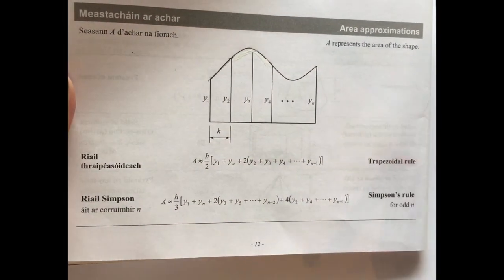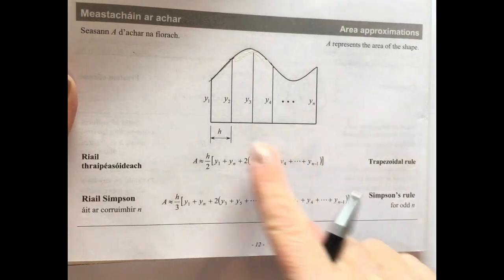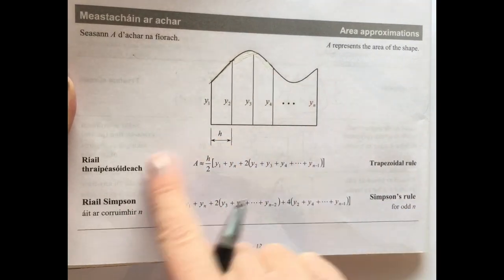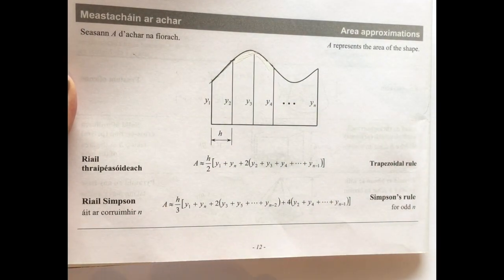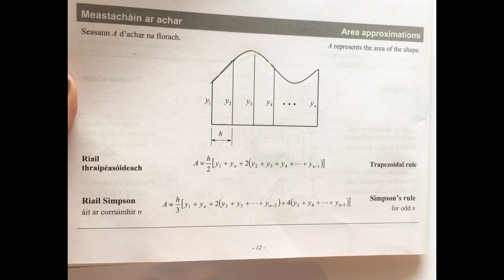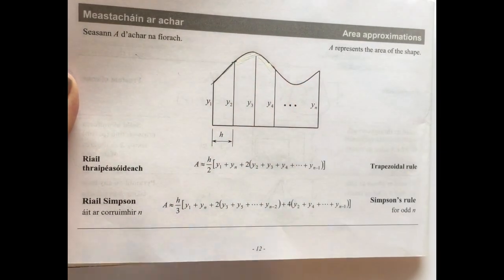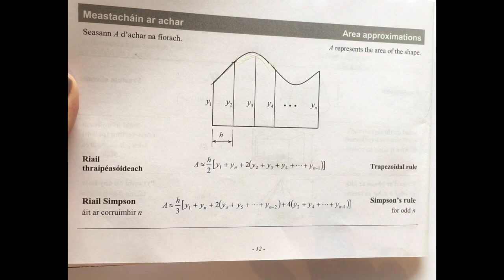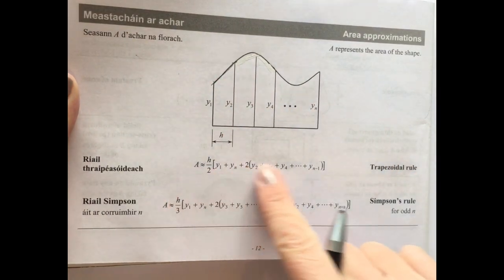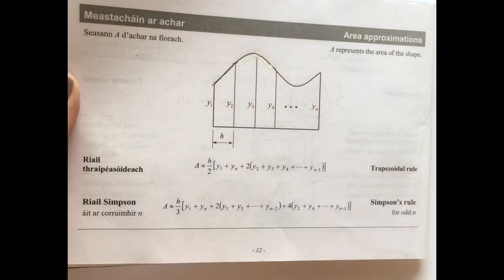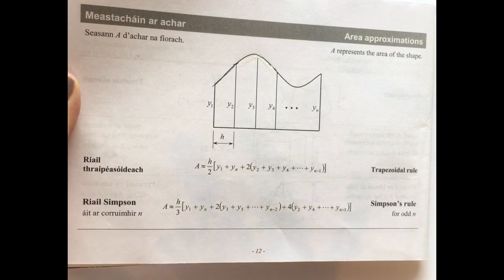Here is the trapezoidal rule, and you can see it's associated with these kind of irregular shapes. Mostly when this question comes up it tells you to use the trapezoidal rule to estimate the area - and that's what we're doing: making an estimation by breaking the shape up into trapezia. It's a breakdown of using the formula for the area of a trapezium multiple times, because we're splitting the land up into strips.